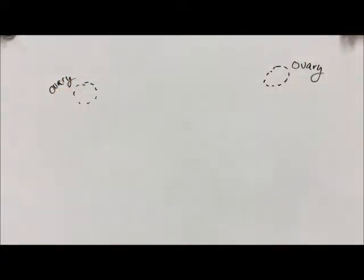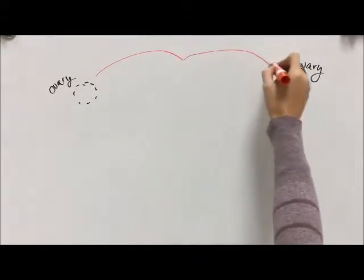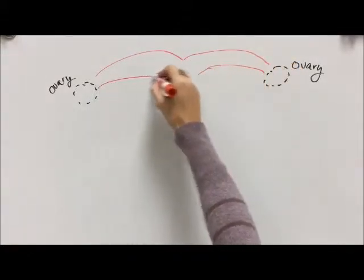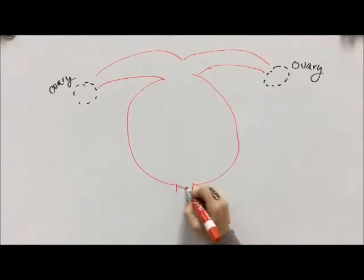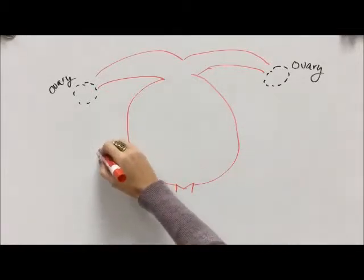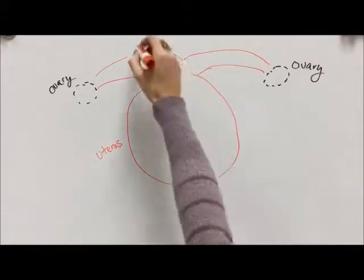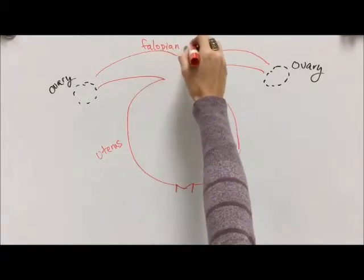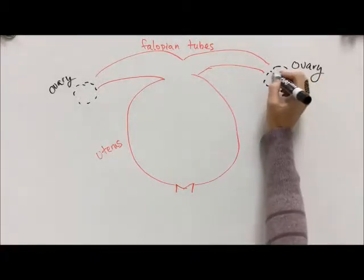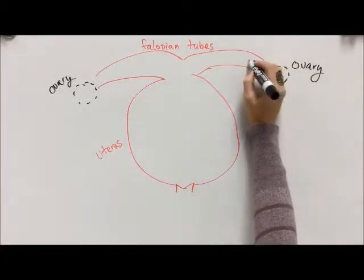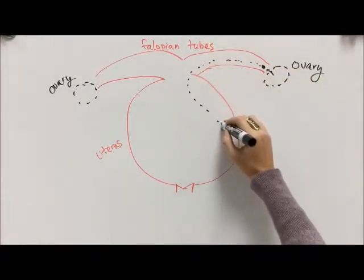Whereas in males, interestingly, all of their meiosis happens after puberty. So the ovaries, there's two of them, and they're tucked inside of the pelvis of the female. They're very, very tiny. This is a very large image for you. And the ovaries are connected to the uterus, which is the home of a baby, by these beautiful little antenna-looking things called fallopian tubes.